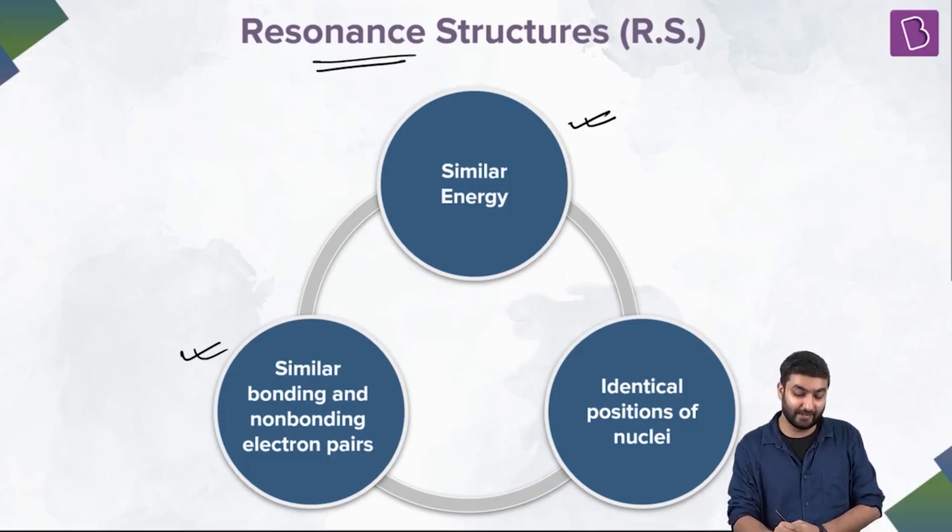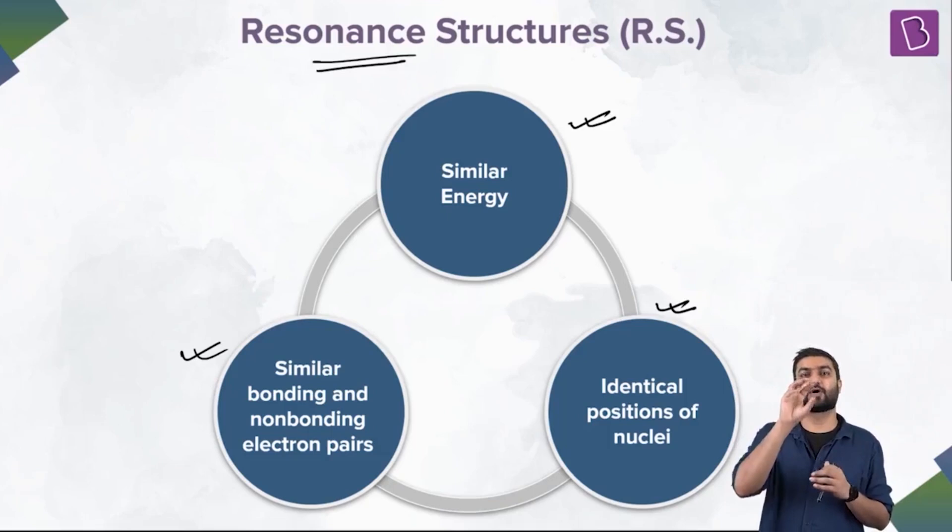Similar bonding and non-bonding electron pairs. What does this mean? Think about it. So you are not changing the total number of electrons. You are not generating a positive charge. You are not generating a negative charge. So yeah, how many lone pairs you have, how many bond pairs you have might change individually. But their collective sum, the total number of electrons, do not change. Now, what do we have over here? Identical positions of nuclei. Then again, you don't alter the inter-nuclear arrangement. You don't, if O3 has oxygen, oxygen, oxygen, you don't make it a linear structure. No, you don't do that. You start with the fact that I am not going to change the position of the nuclei.